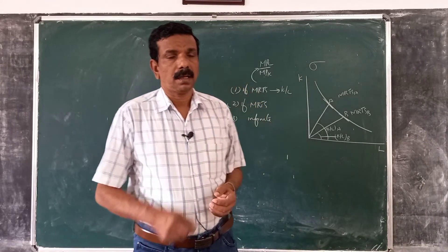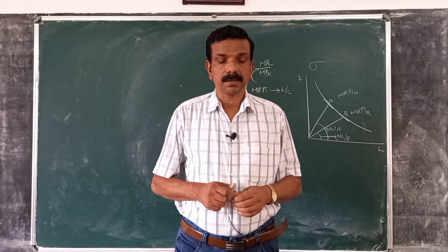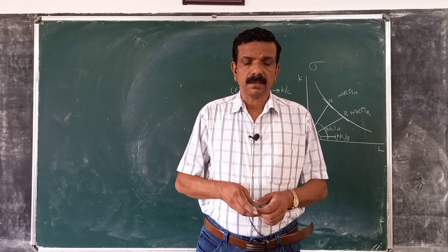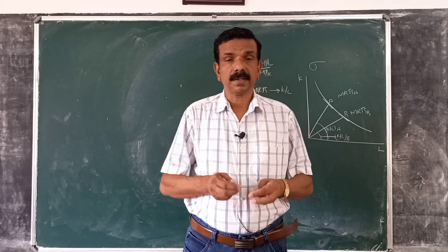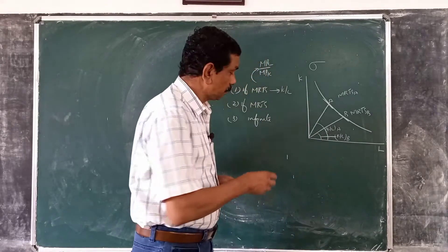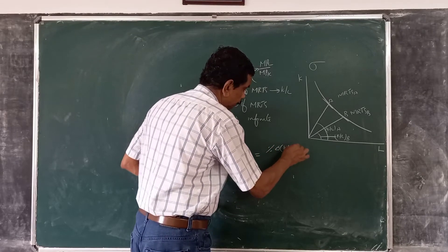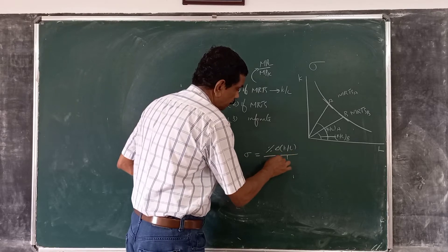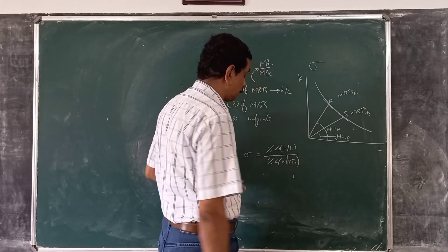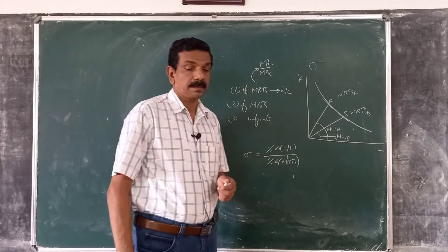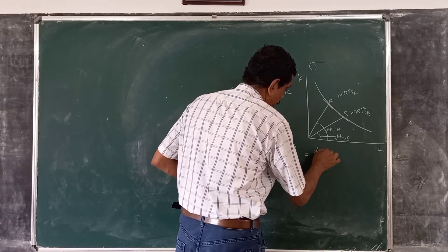Third, if the change in MRTS is infinite for small changes in K/L, there is no substitution — that is the case of the fixed proportions production function. In summary: if MRTS does not change much as K/L changes, substitution is easy; if it changes much, substitution is difficult; if change is infinite, there is no substitution at all.